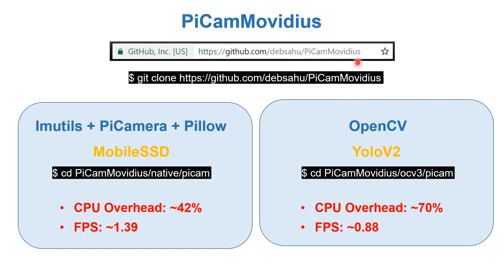I've created a GitHub repository called 'pi camera video' which you can clone using the provided command. There are two approaches: the first uses imgutils, picamera, and Pillow; the second uses OpenCV 3. The first approach uses YOLO v2 and the second uses MobileNet SSD. MobileNet SSD has a much lower CPU overhead — around 42 percent compared to around 70 percent for YOLO v2. On a Raspberry Pi Zero W, MobileNet SSD achieves around 1.39 to 1.4 frames per second.